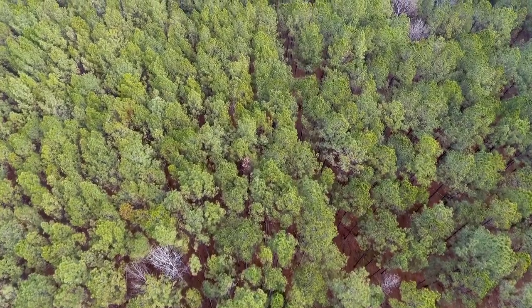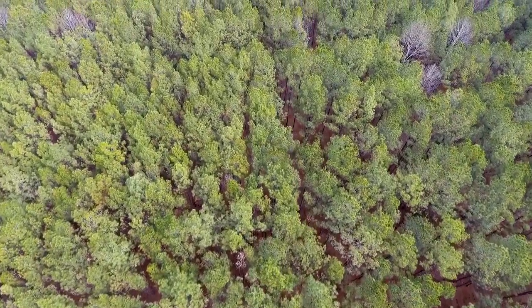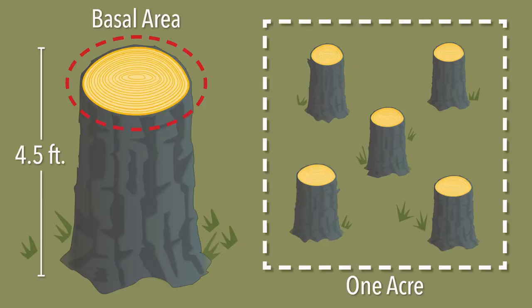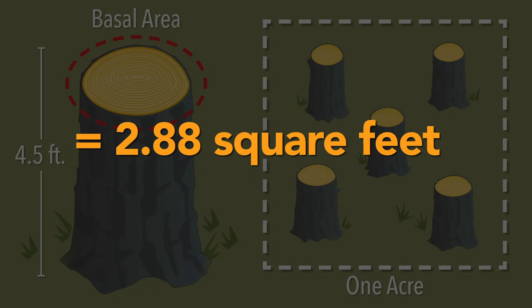Basal area measurements can also be estimated on a per-acre basis and are the sum of all cross-sectional areas of stems within a particular stand. An easy visualization would be to picture an acre of land with every tree cut off at four and a half feet. The sum of all the stump surface areas would equal the square feet of basal area for that acre.